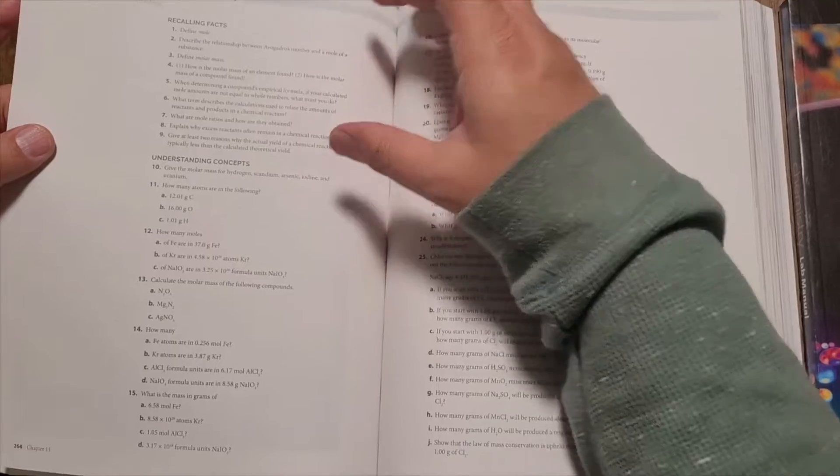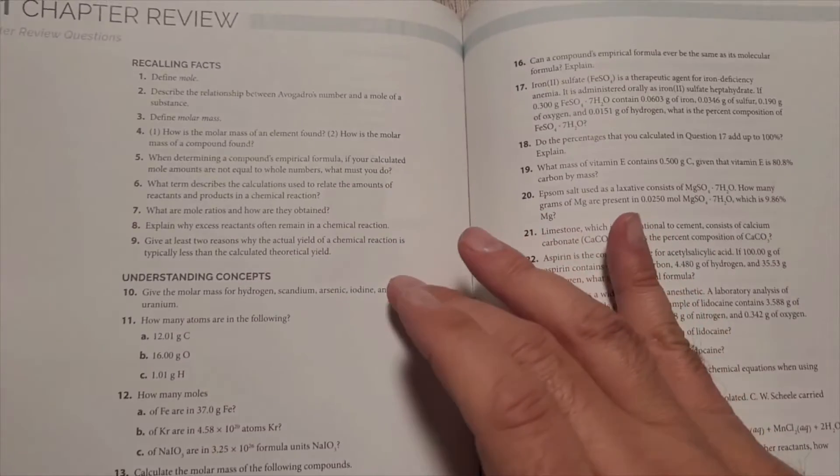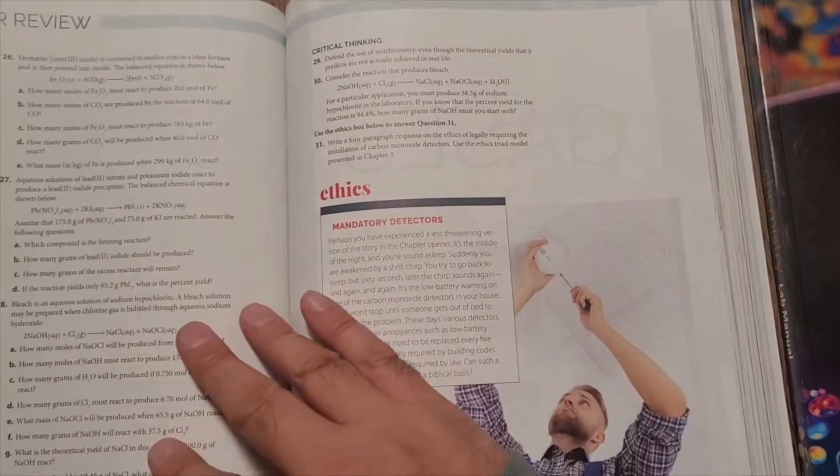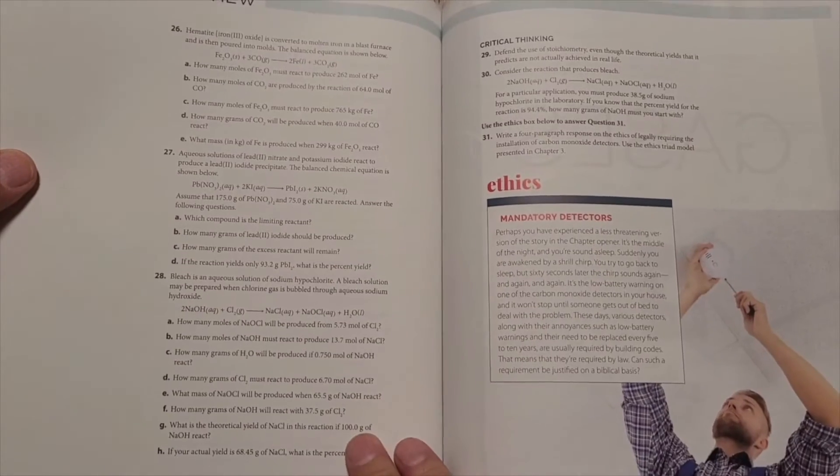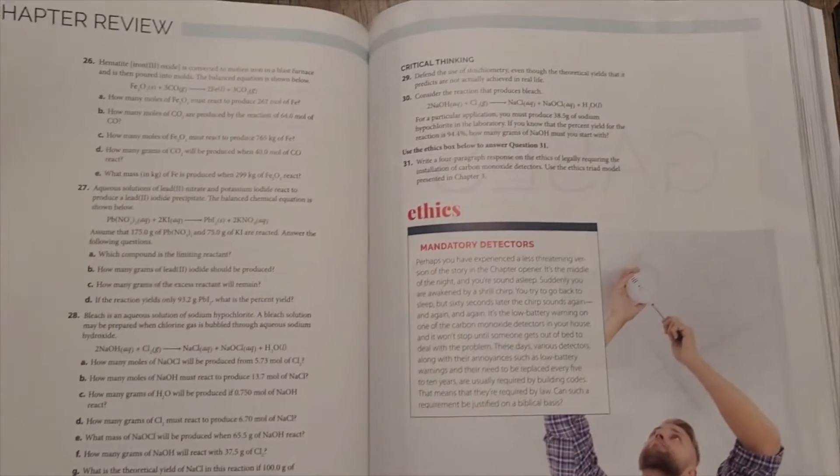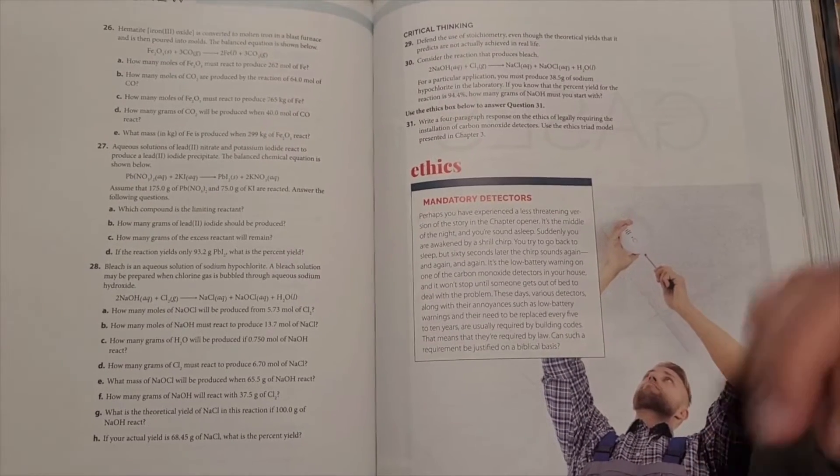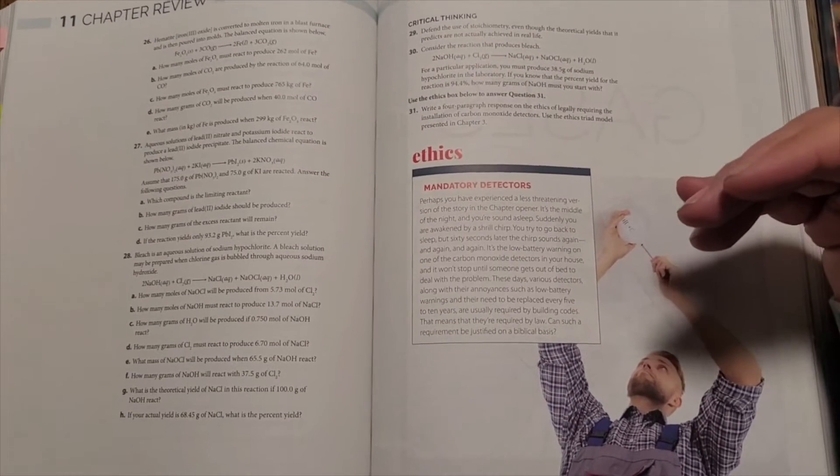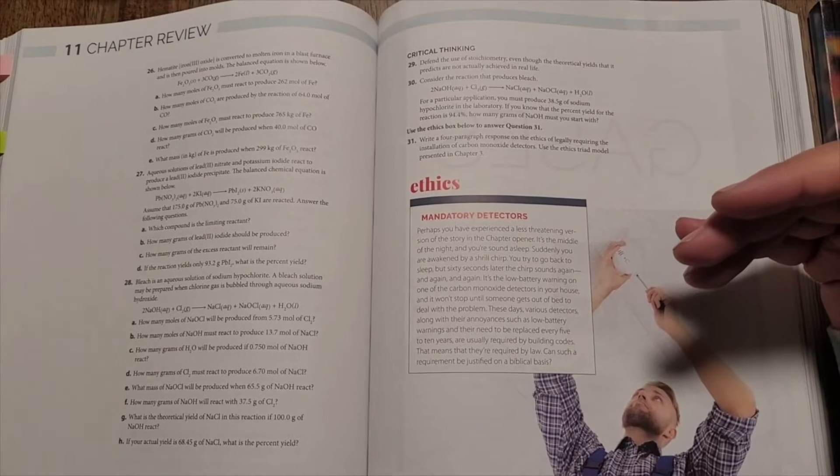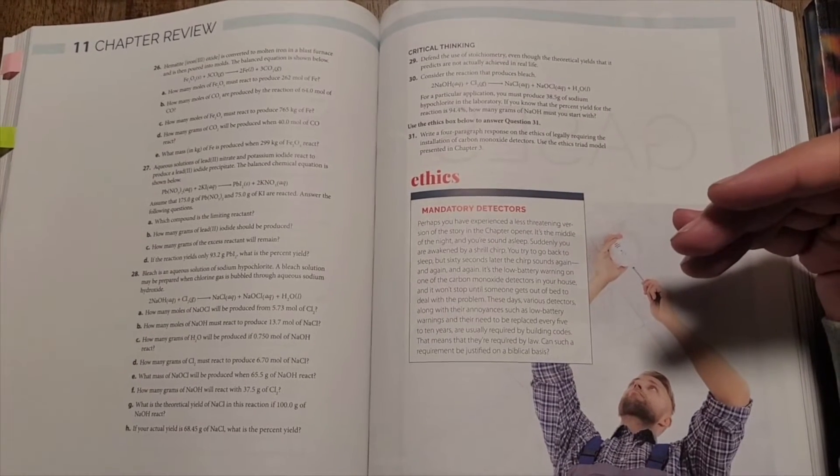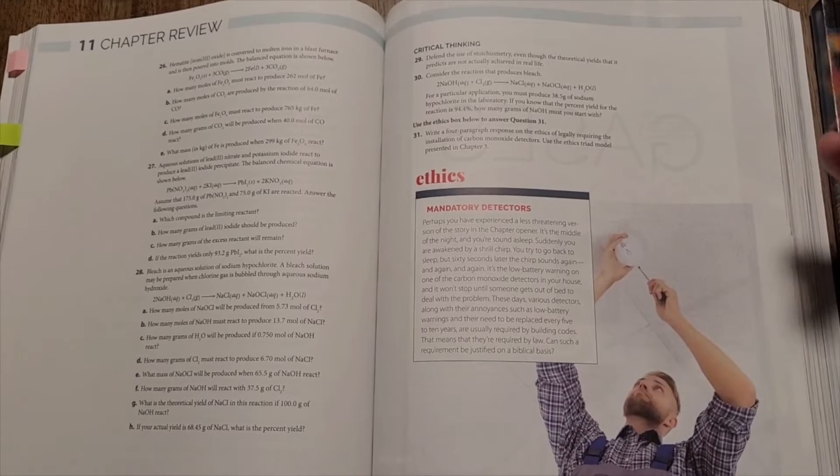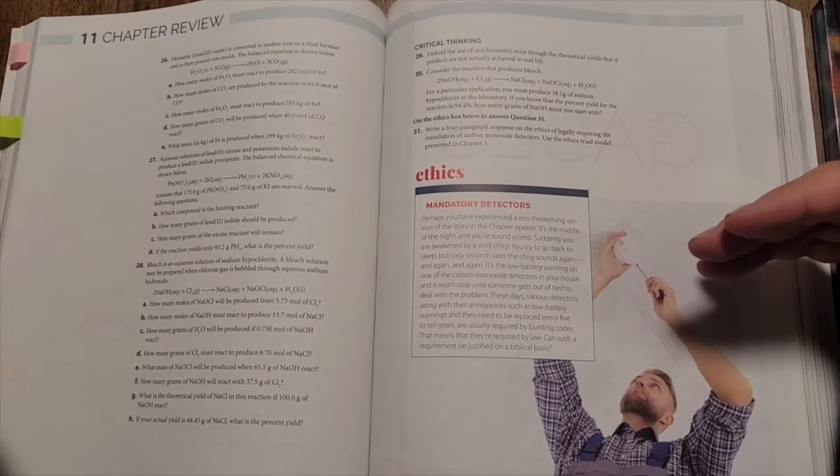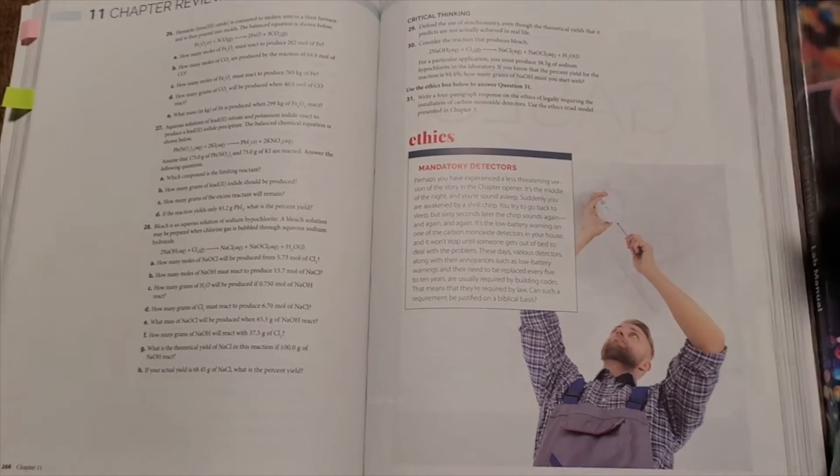You start off with very simple recalling fact questions for the review. Then it gets to understanding concepts. Hey, how do you prove what you know what you're doing here? And then you get into some of the more difficult critical thinking questions, the more complex mathematics questions. And then the ethics, which is an awesome section of this book, because you're talking about how does my belief system affect science or how should it or why does it? These are great questions that force a kid to think a little bit outside the textbook and a little bit outside themselves and confront real life situations.